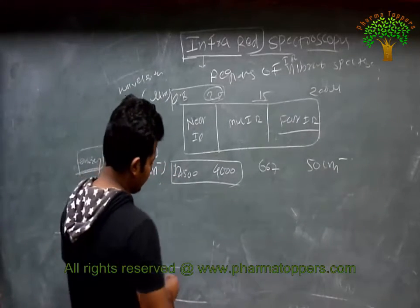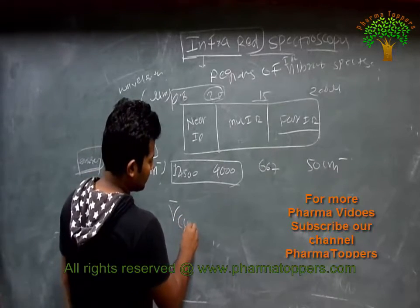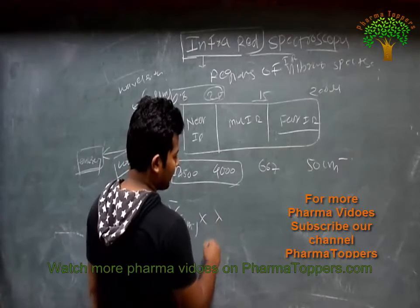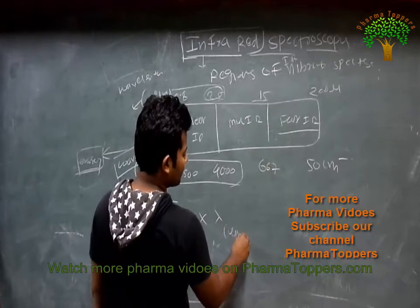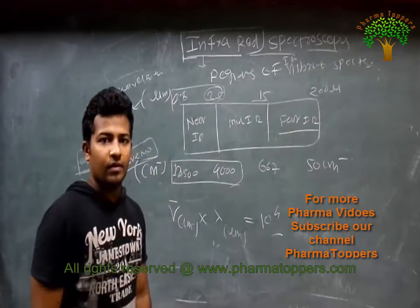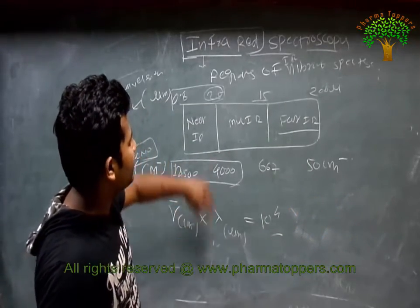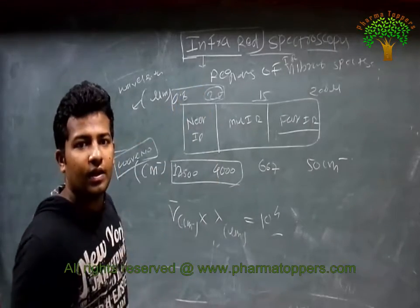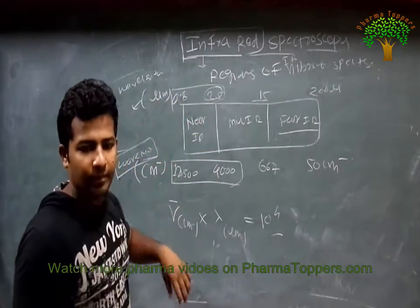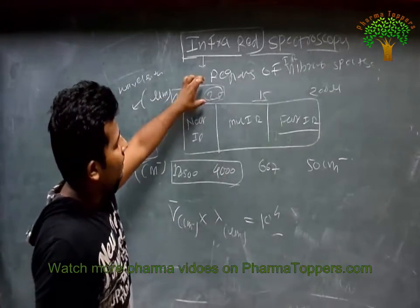Simple formula: V̄ (wavenumber in cm⁻¹) multiplied by λ (wavelength in micrometers) is equal to 10 raised to 4. So, V̄ × λ (μm) = 10⁴. Then we can calculate the wavelength or the wavenumber from each other.